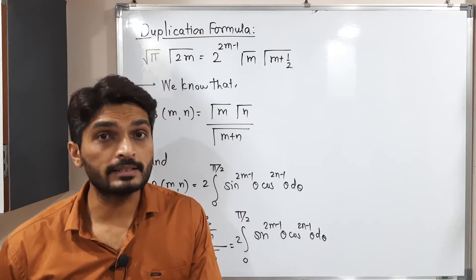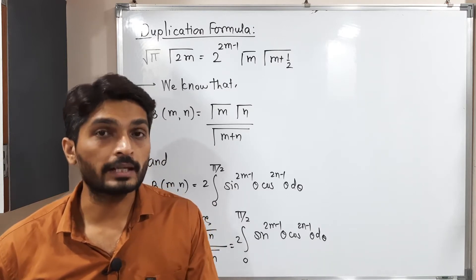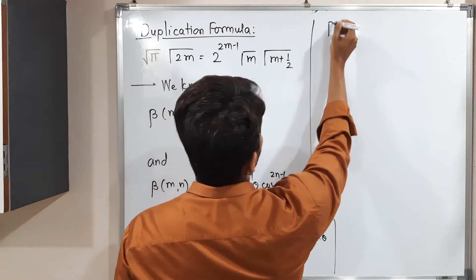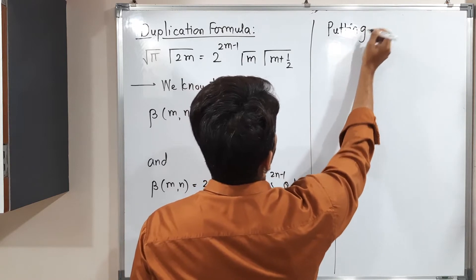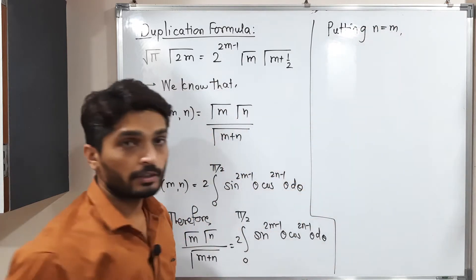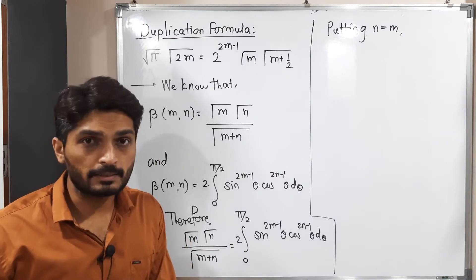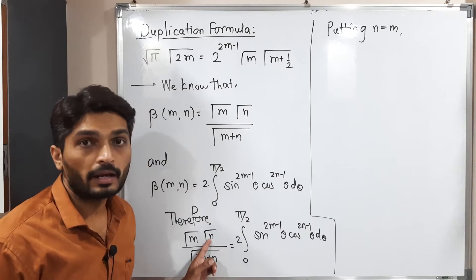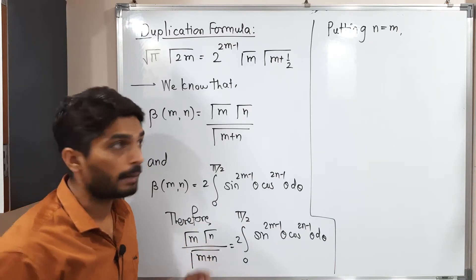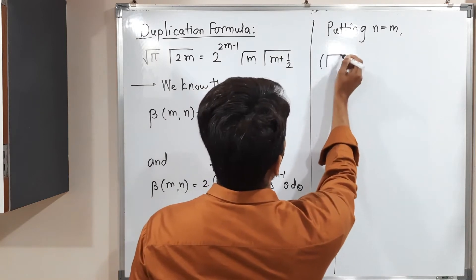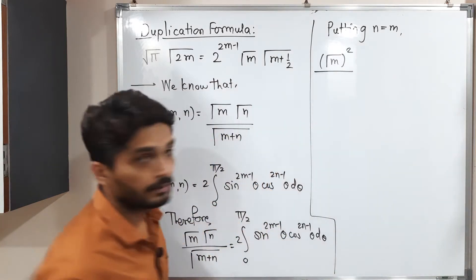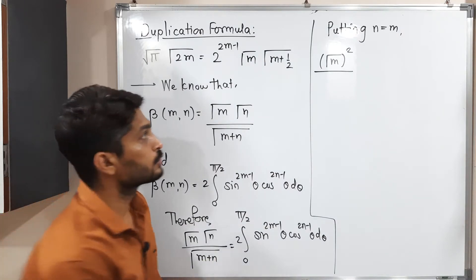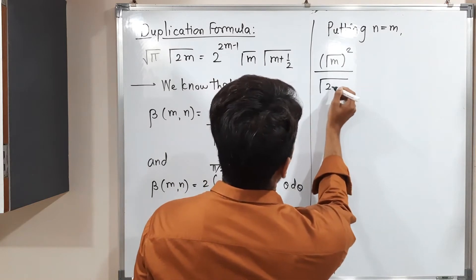Now I am going to put n equal to m. Substituting n = m: on the left, gamma(m) times gamma(m) becomes gamma(m) squared, divided by gamma(m+m) = gamma(2m). On the right, the integral becomes 2 ∫₀^(π/2) sin^(2m−1)(θ) cos^(2m−1)(θ) dθ.